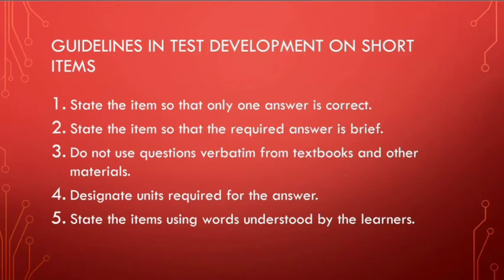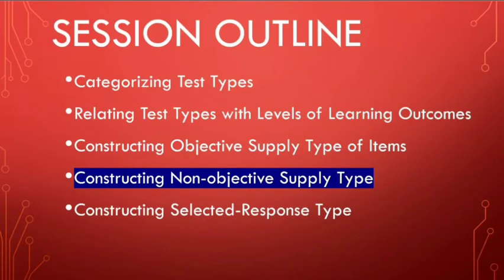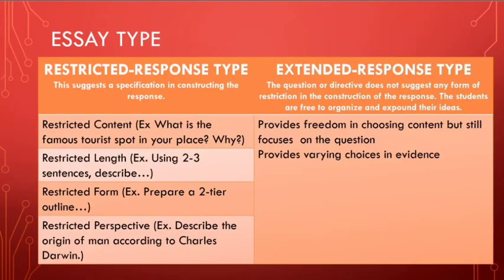We're done with the construction of objective supply type of test items and shall move to constructing non-objective supply type of test. For objective supply type, we are looking for one specific answer — either a short response or a gap fill. For non-objective supply type, we are talking about the essay type of test, which could be restricted or extended. On your screen you see a table showing the restricted response type and the extended response type — the two major classifications of essay type of test.